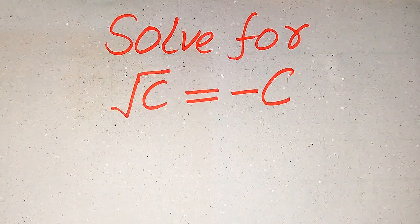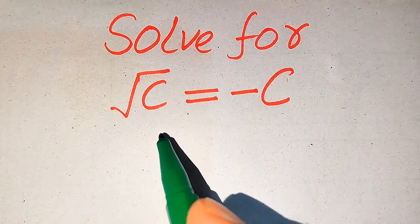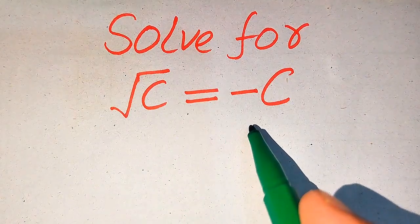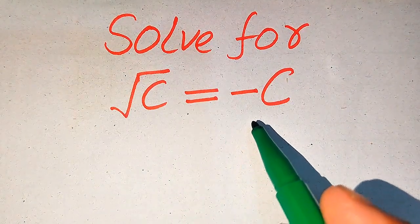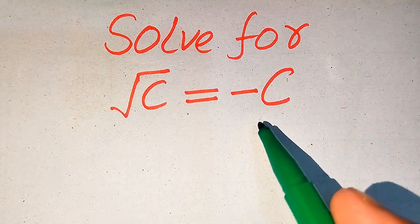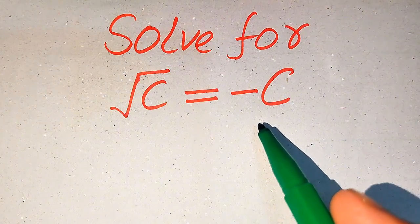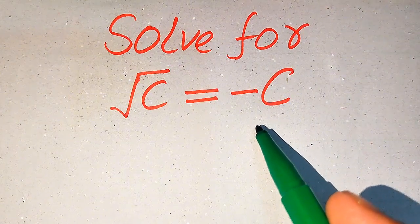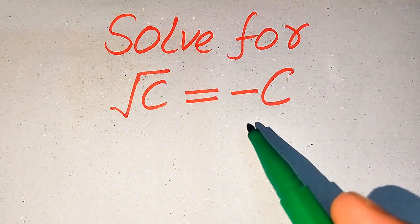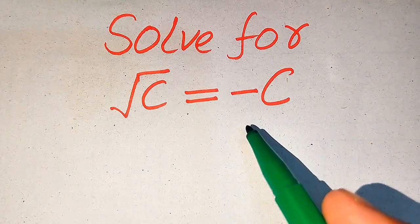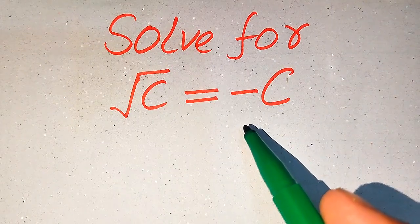Hello everyone. How to solve this problem: for the values of C, if we have square root of C equals minus C, and we solve this problem for all the values of C. First we find all the roots of this equation, and at the end we will verify which of the roots are solutions and which of the roots are extraneous roots.